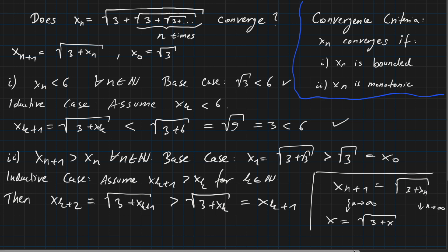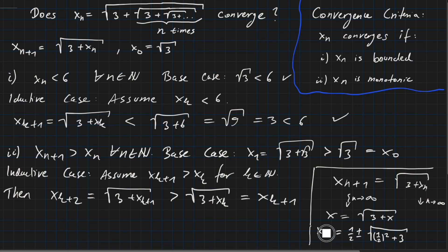This equation can be solved easily using well-known formulas, giving two solutions: x = 1/2 ± √(1/4 + 3). Since one of these solutions is negative and the sequence is always greater than zero, the negative solution cannot be our limit. The answer is the positive solution: x = 1/2 + √(1/4 + 3).